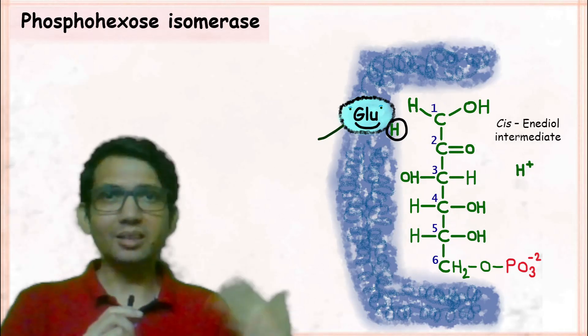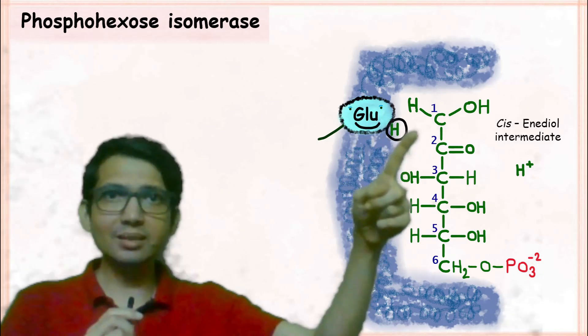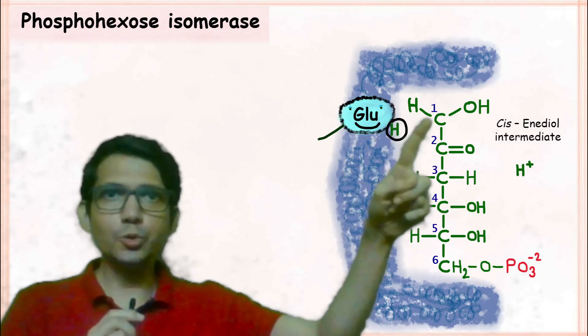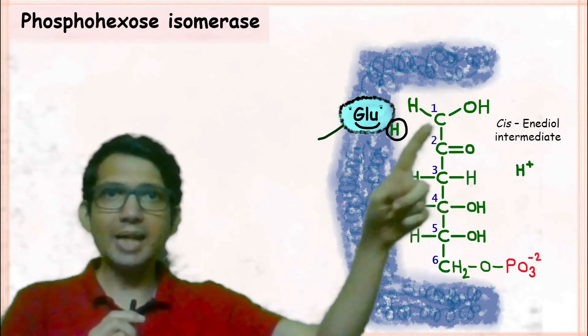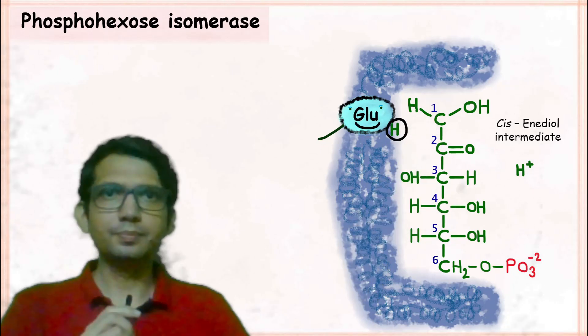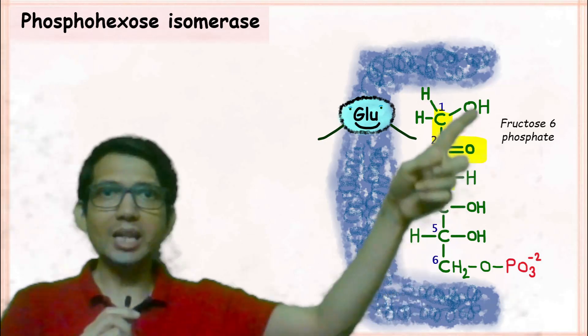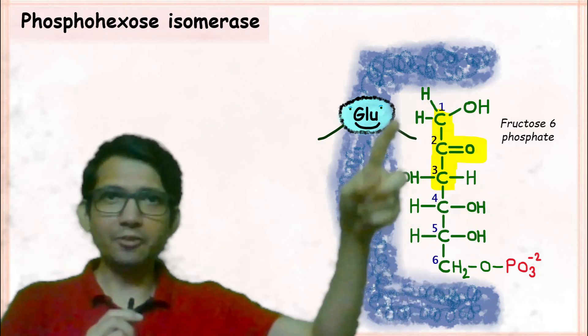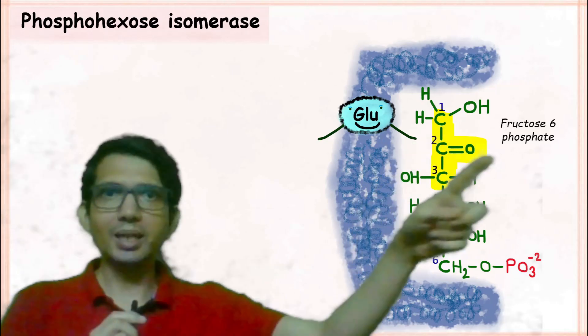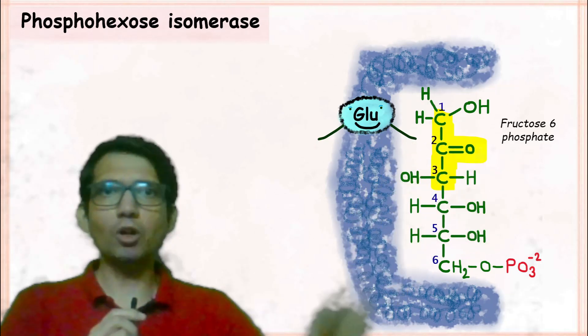And the hydrogen which was taken away by glutamic acid is transferred to C1 carbon atom. Now if you notice this structure carefully, then we have a keto group and the final product formed is fructose 6-phosphate.